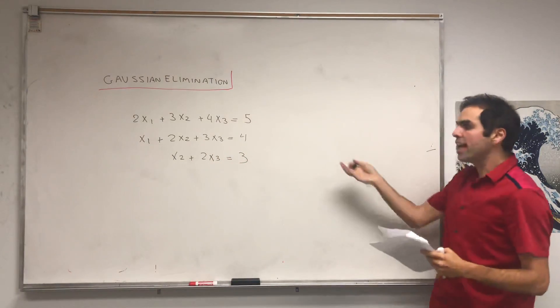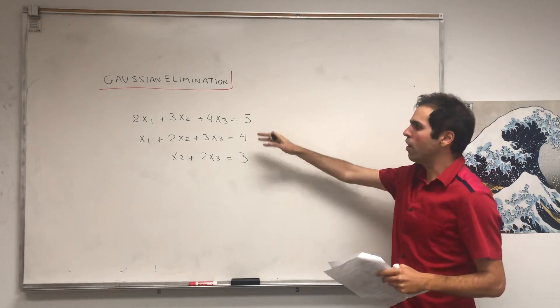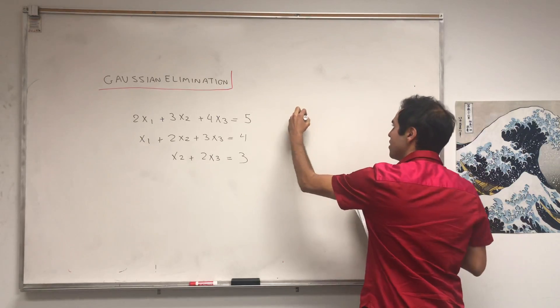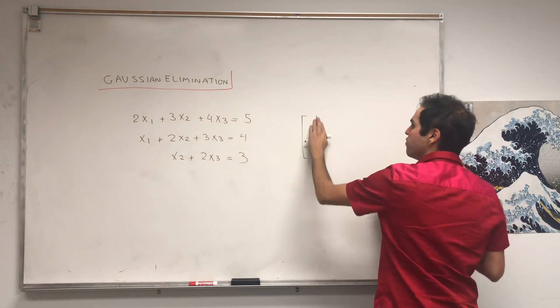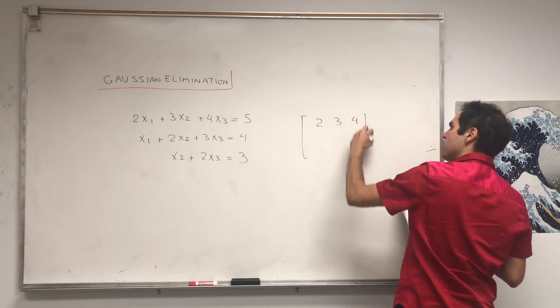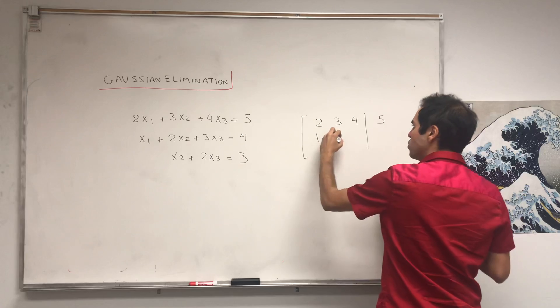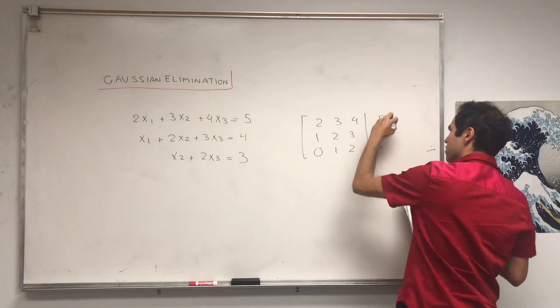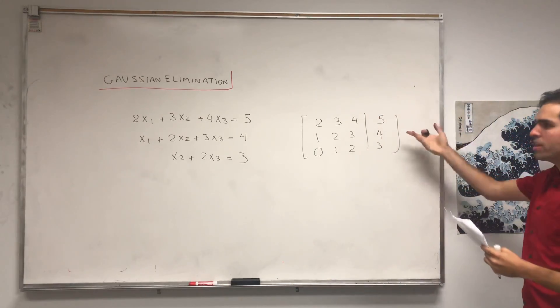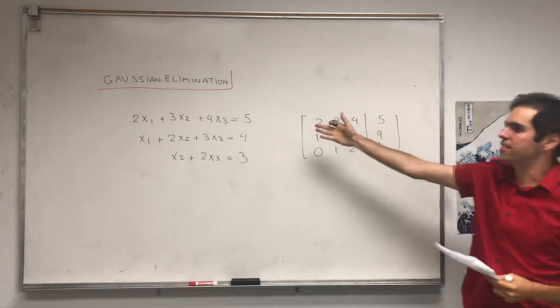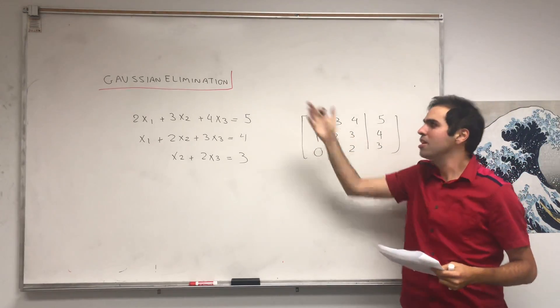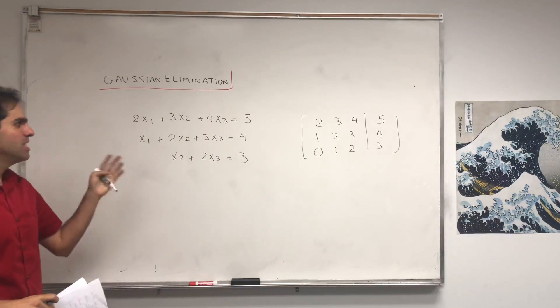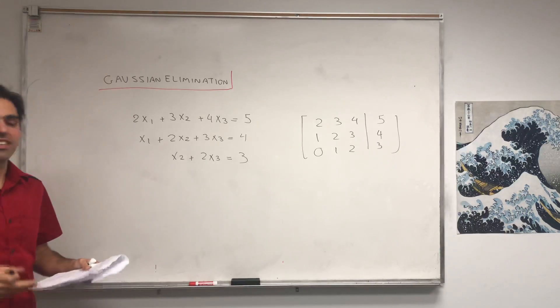And then x2 plus 2x3 equals 3. Well, the way Gaussian elimination works is that first of all, you write this as a matrix called an augmented matrix, which in this case would be [2, 3, 4, 5], [1, 2, 3, 4], and then [0, 1, 2, 3]. So this is the matrix that encodes the system.